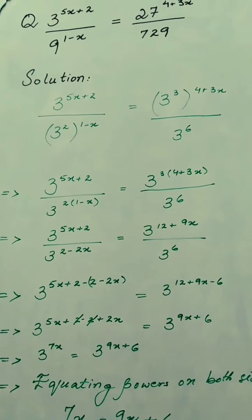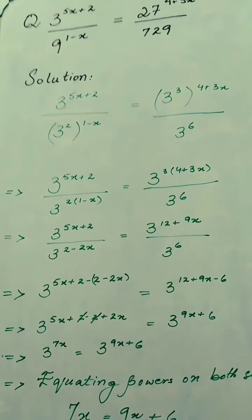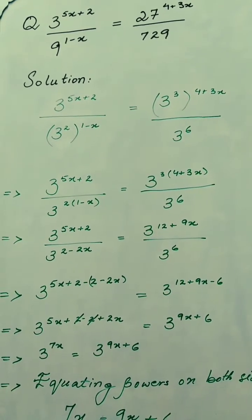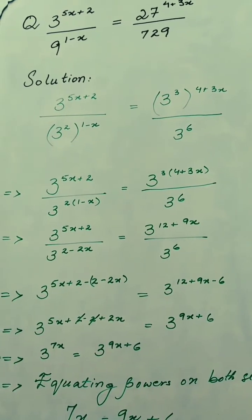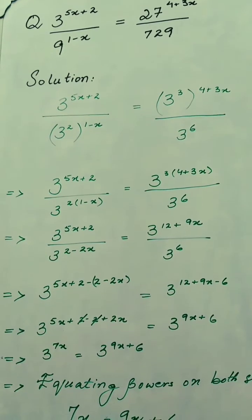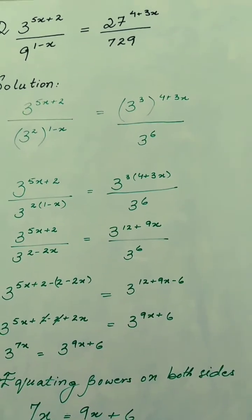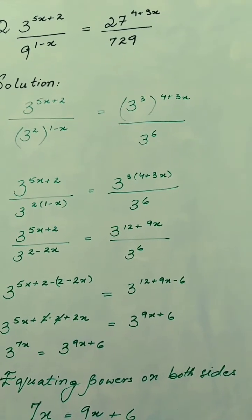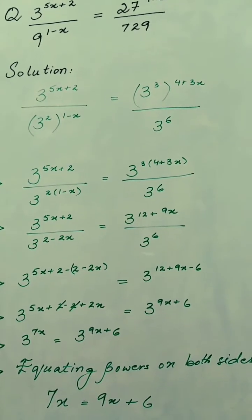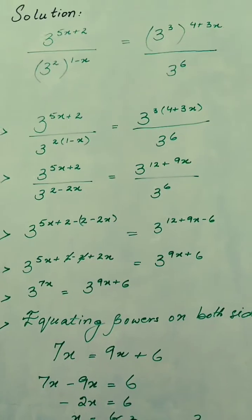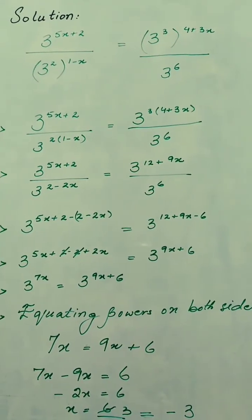In order to solve this question, first we make all the bases the same on both sides. We write 3 to the power (5x+2) in the numerator, and in the denominator we have 3 squared which equals 9, raised to the power (1−x). Similarly on the right hand side we have 3 cubed which equals 27, raised to the power (4x), and in the denominator we have 3 to the power 6.